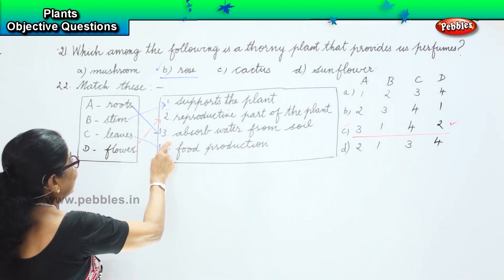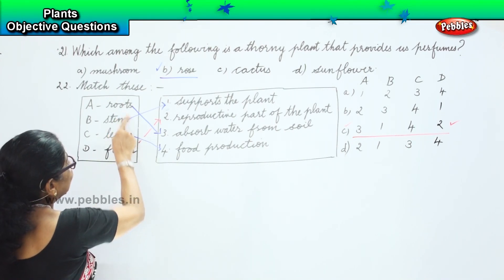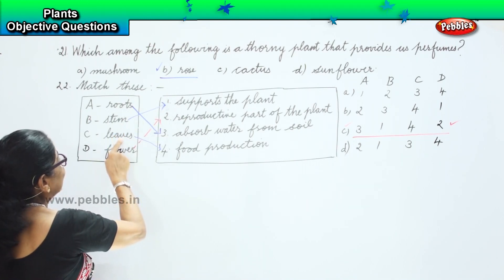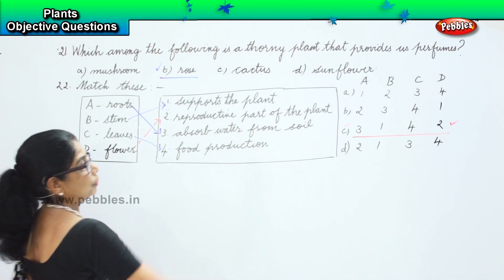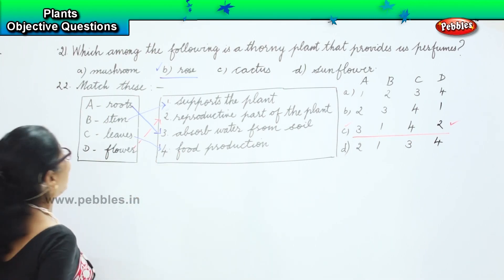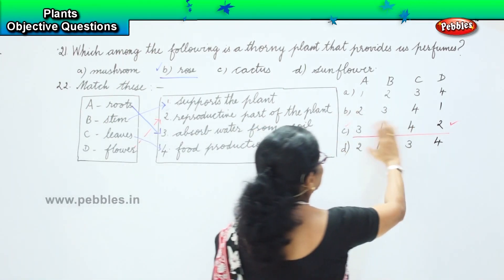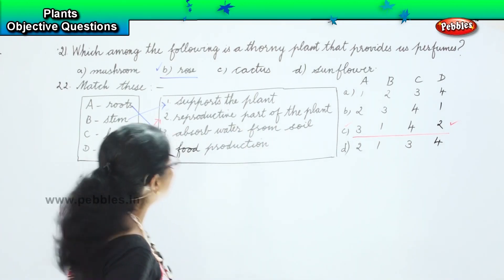Why 3? Roots, 3. And then stem, 1. Leaves, 4. Flower, 2. So, which among the match these, they said. We match this correctly. And among the options A, B, C, D, option C is the correct answer for us.